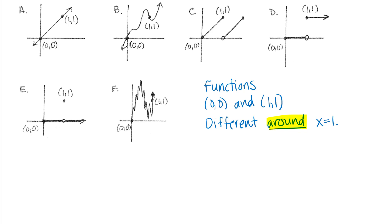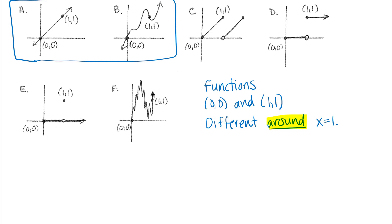Sometimes when students look at these graphs they think some of these functions are more typical kinds of functions and others maybe not. In algebra and pre-calculus you might be used to looking at graphs like A and B here. A appears to be the graph of a line, so maybe you could even write the equation of that line. B looks like a graph of a polynomial function. Some of these other graphs look a little strange, and sometimes students think maybe those are not functions you would come across very often.